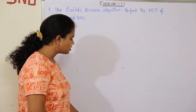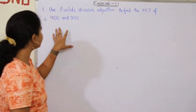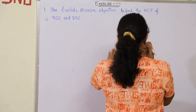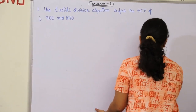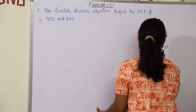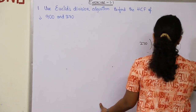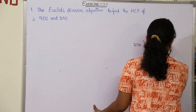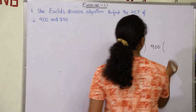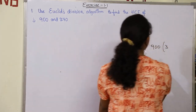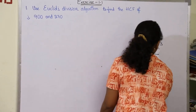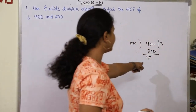To find the HCF of 900 and 270, first let's divide 900 by 270. Let's make a rough work over here where 900 divided by 270. Let's go with 3, where 3 into 270 gives 810. Therefore the remainder will be 90.